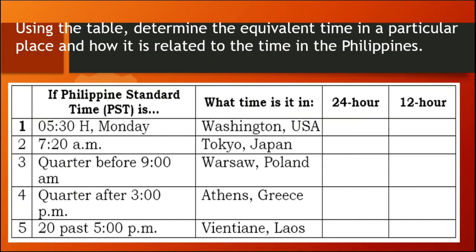Number 1: If Philippine Standard Time is 0530 hours Monday, what time is it in Washington, USA? Looking at the table, Washington USA is minus 12 compared to Philippine Standard Time. So by subtracting 12 hours from 0530, you get 5:30 PM Sunday, or 1730 in the 24-hour format. Number 2: If the time is 7:20 AM, what time is it in Tokyo, Japan? Tokyo is plus 1, so in Tokyo it is 8:20 AM, or 0820 hours.